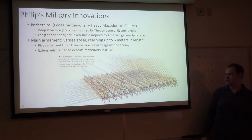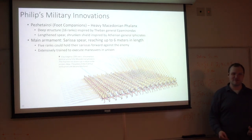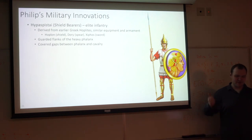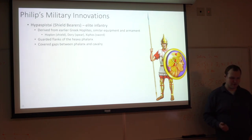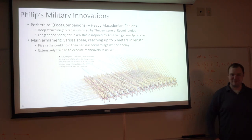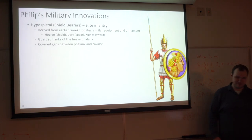In addition to the heavy phalanx, Philip had elite infantry called the Hypaspists — shield bearers — derived from early Greek hoplites but with significantly better equipment. They still carried a round hoplon shield, a dory spear, and a xiphos sword. These were used to guard the flanks of the phalanx, because the phalanx is really impenetrable from the front but very vulnerable from the sides — it's difficult to swing all those long spears sideways to defend against a flanking attack. The elite infantry would protect the flanks and cover the gaps between the phalanx and the cavalry.